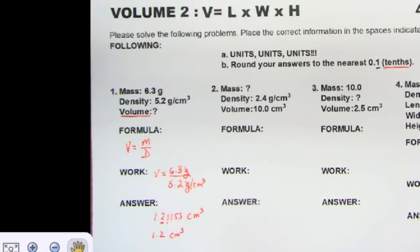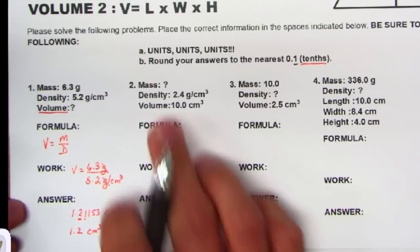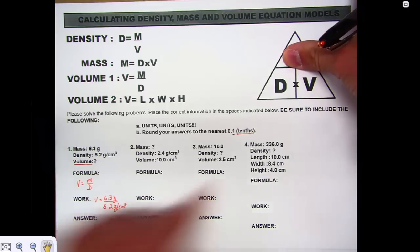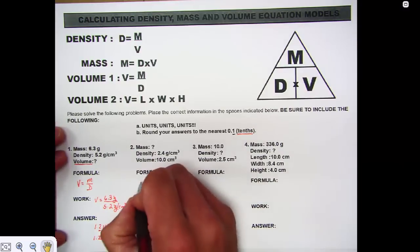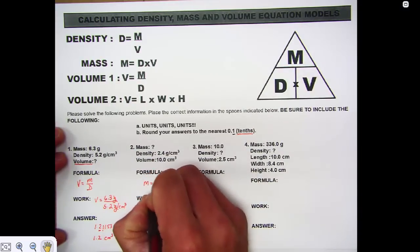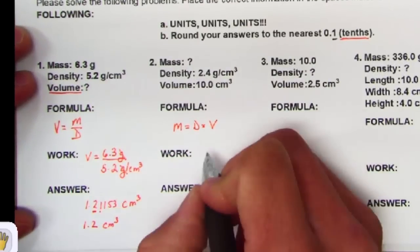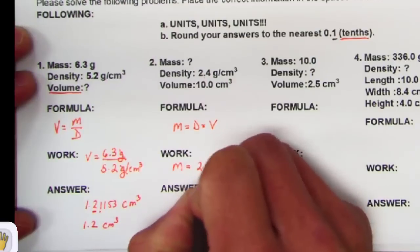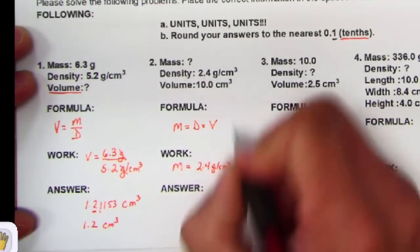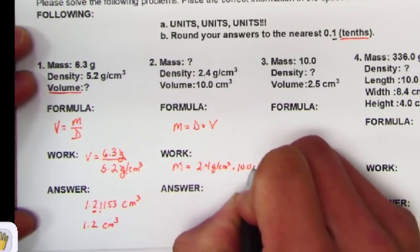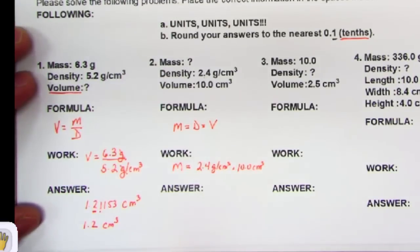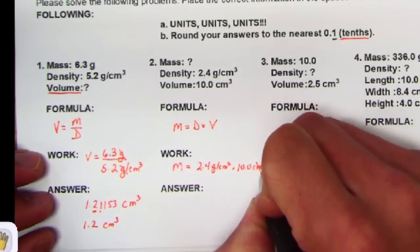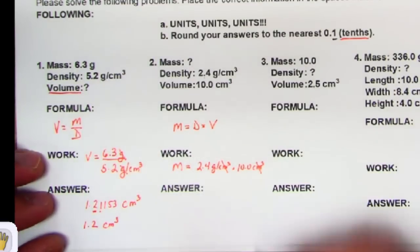It's just a matter of reading what you have and plugging it all in. Next: find mass — they give density and volume. Cover up mass in the triangle and you see density times volume. Mass equals density times volume. Plugging in: mass equals 2.4 grams per cubic centimeter times 10.0 cubic centimeters. The cubic centimeter units cancel, leaving grams.